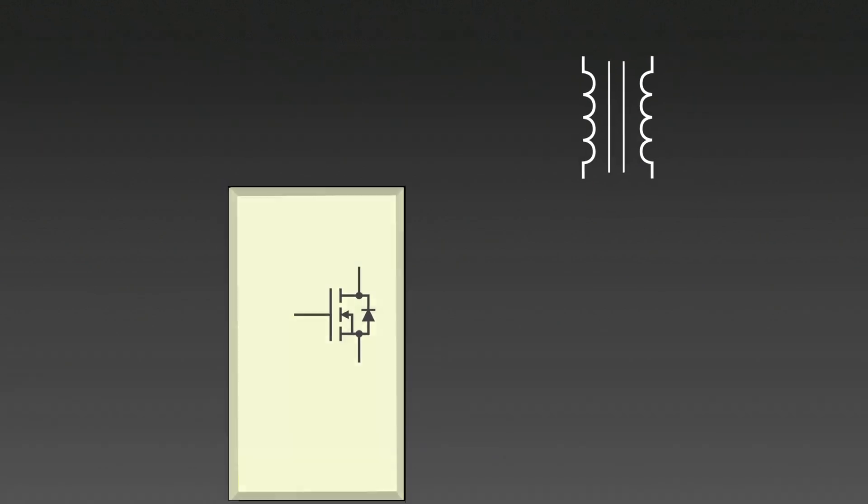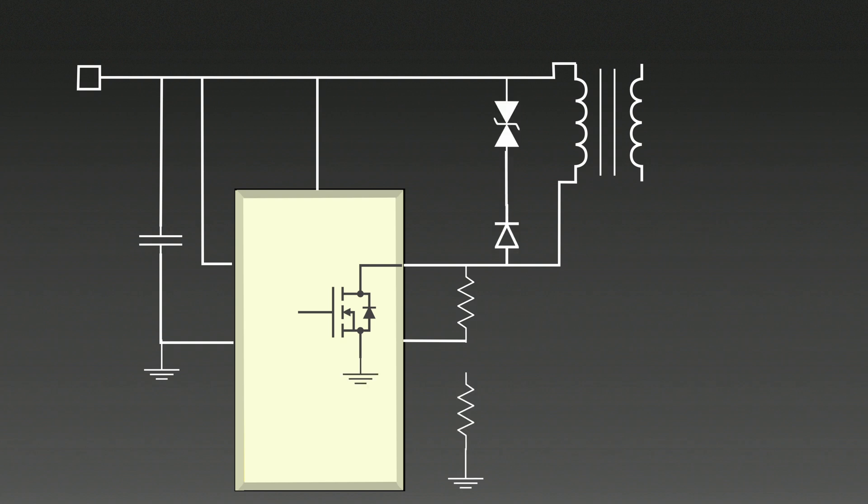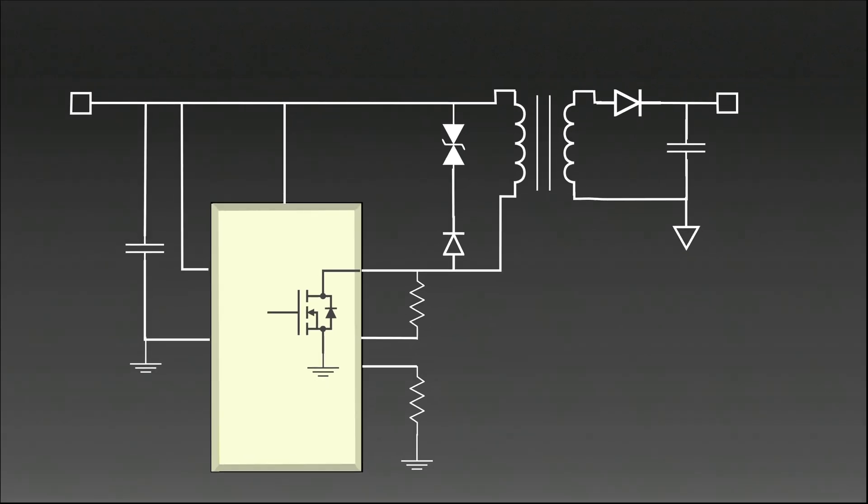First is the transformer. It provides electrical isolation and energy storage. Then, switching element or MOSFET, which is controlled by the IC to regulate the energy flow. Primary side circuit includes the input capacitor, switching controller and feedback sensing. Secondary side circuit includes the rectifying diode and output capacitor for voltage rectification and filtering. And finally, the controller IC. It regulates the switching of the MOSFET based on the feedback from the primary side.